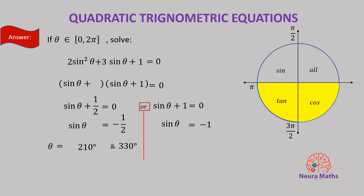Similarly, sine theta equals negative 1. What angle has a sine of negative 1? The angle whose sine is negative 1 must be quadrantal — it is 270 degrees.